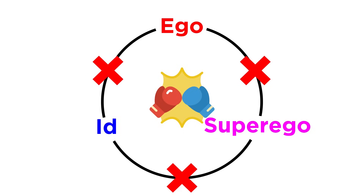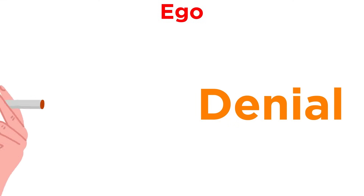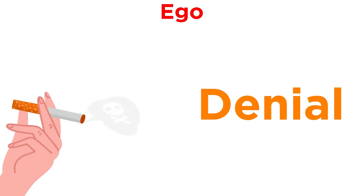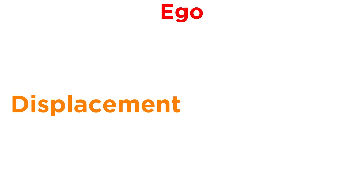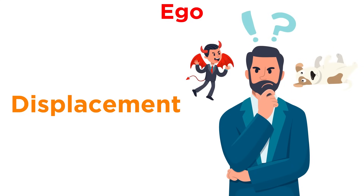To protect itself from becoming overwhelmed, the ego can use various defense mechanisms. This could be things like denial, like when a smoker denies that smoking is bad for their health. Or displacement, which is when you satisfy an impulse with a substitute object, like if someone were to kick a dog when they really want to punch their boss.